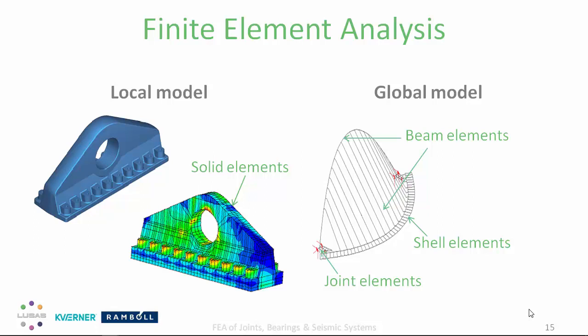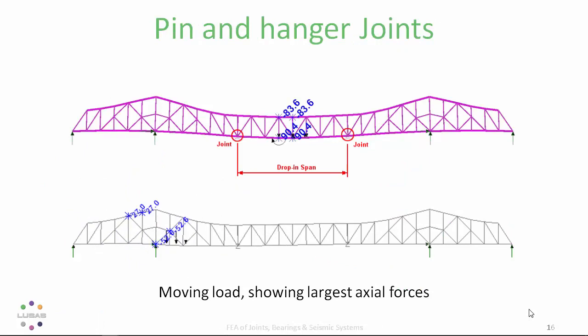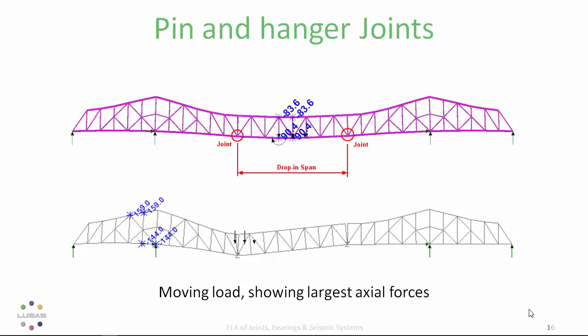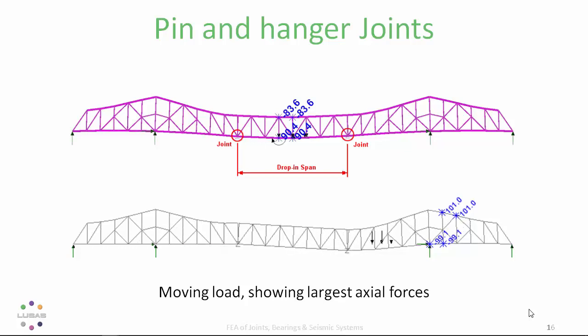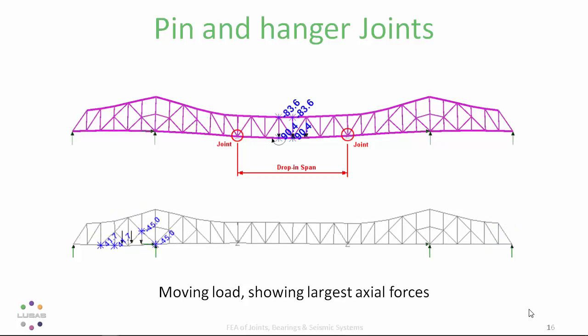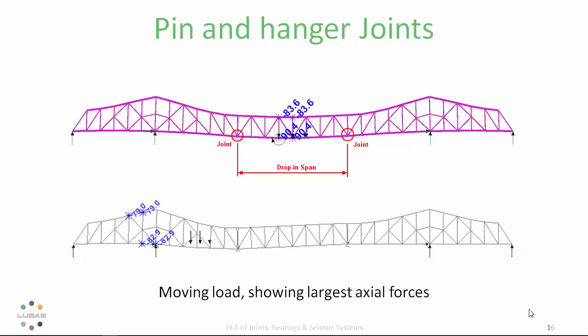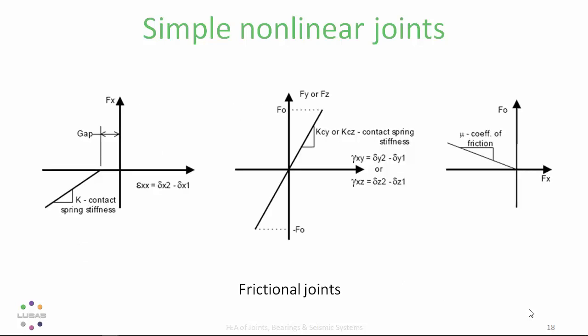Global models may require joint elements for movement or simply for bridge articulation. A global steel truss bridge with two hanger joints supporting a drop-in centre span can be modelled using a simple joint element. The rotations at the joint must not exceed a design value, and in extreme conditions the joint could reach its maximum rotation and become jammed — a non-linear analysis can capture that change in behaviour. Simple non-linear joints include elastoplastic behaviour, smooth contact joints with initial gaps, and frictional joints.